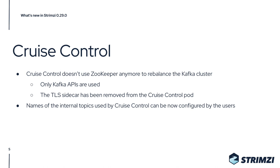There are also some improvements to CruiseControl. CruiseControl now doesn't use ZooKeeper anymore to rebalance the Kafka cluster — it's using only the Kafka API. So the TLS sidecar from the CruiseControl Pod is now removed, so don't be surprised by that. You can now also configure the names of the internal topics which are used by CruiseControl to gather metrics and store data.